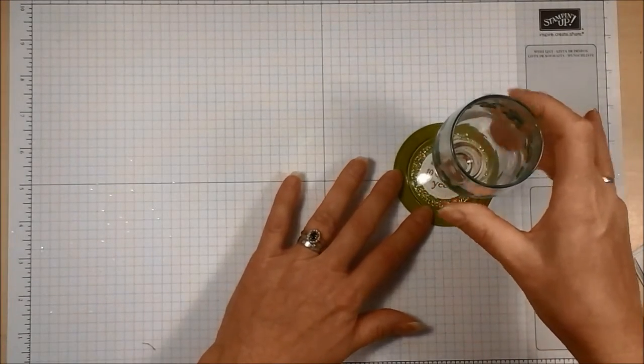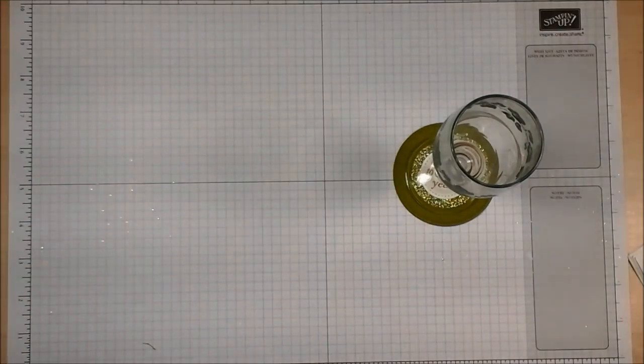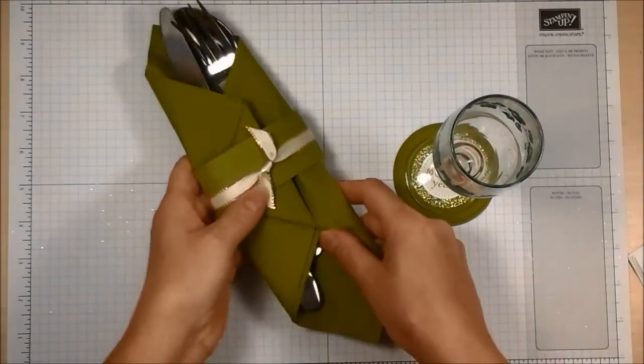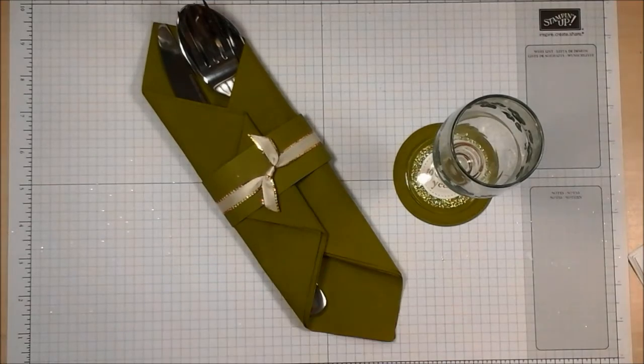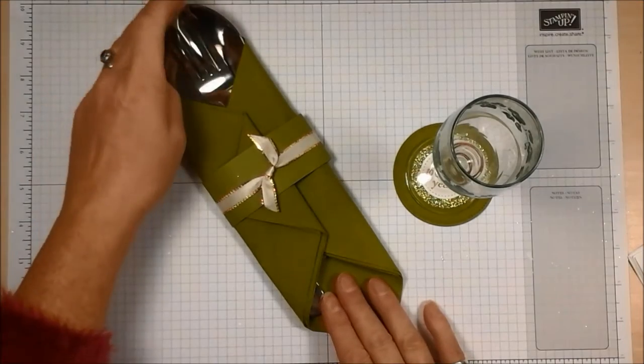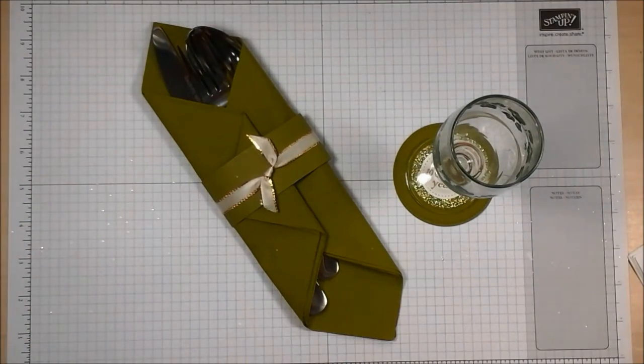And there is my wine glass. It's a beautiful little coaster. It coordinates with the cutlery, the silverware that I have created. And it's a nice way of creating a coordinated look for your table.